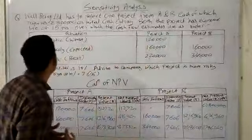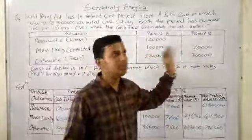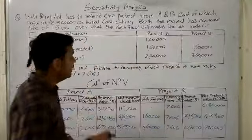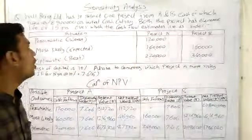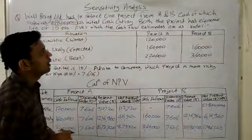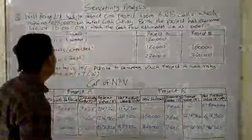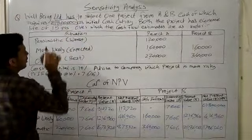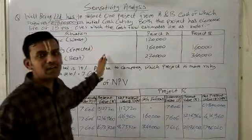The question says that Wellbeing Limited has two mutually exclusive projects, Project A and Project B. Each requires an initial cash outlay of Rs. 8 lakh.